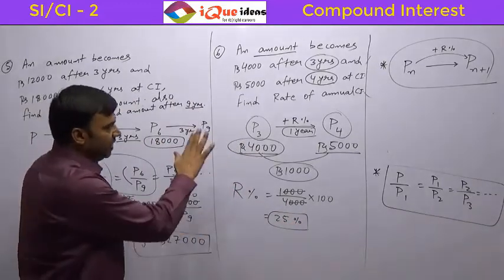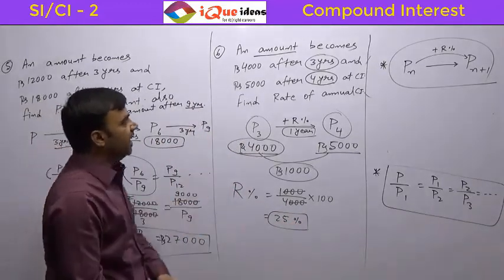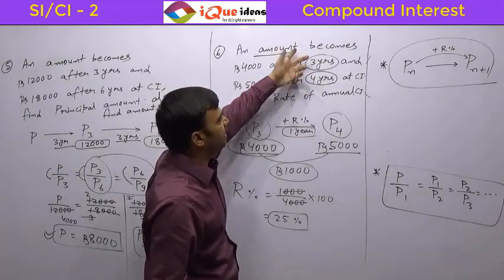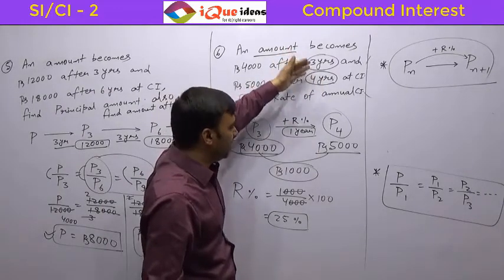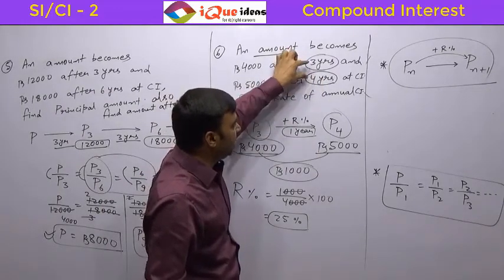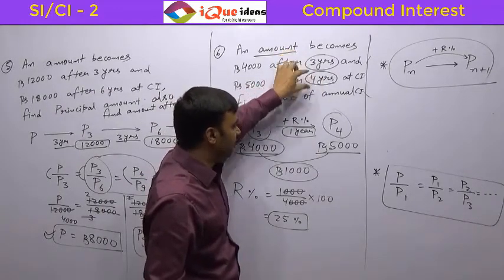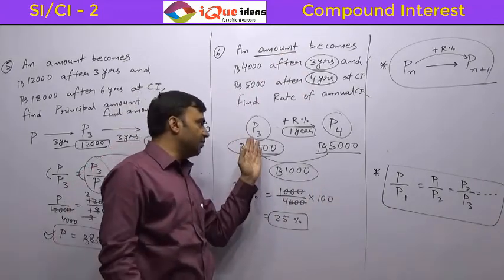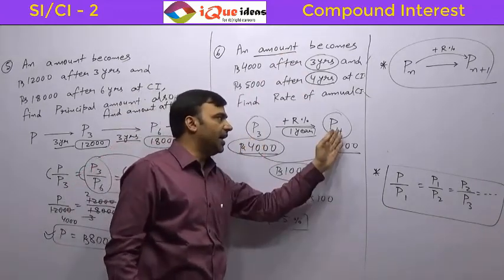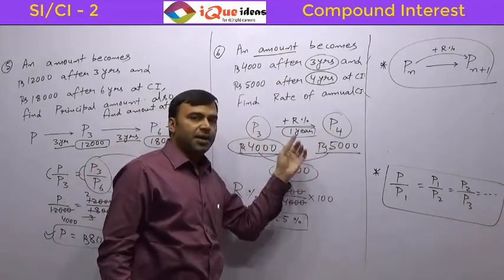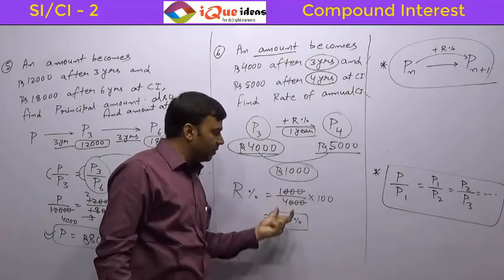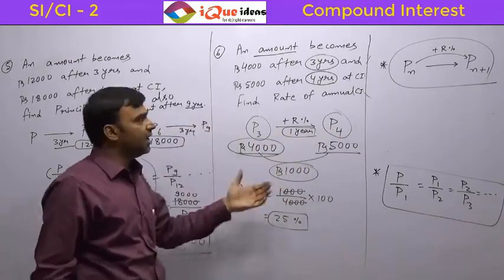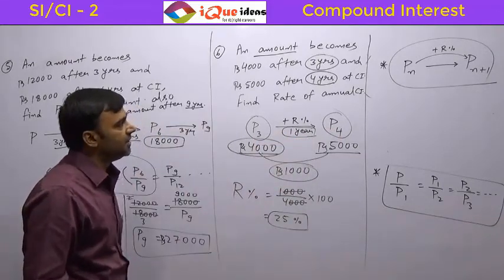You will be asked only such situations like 6 years and 7 years, or 8 years and 9 years — in any case, it has to be 2 consecutive years. Then directly, whatever is the percentage change from the lower year to the higher year, if the gap is 1 year, that percentage change is the rate percentage. Memorize this directly.